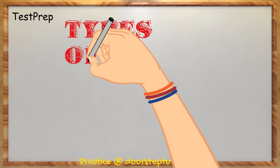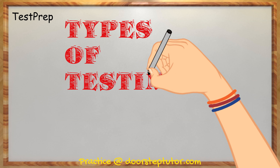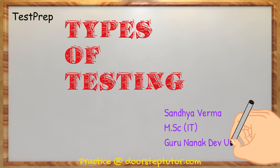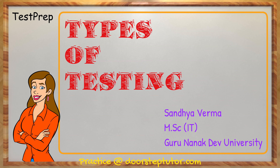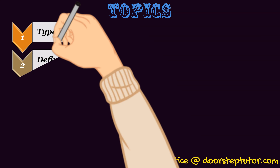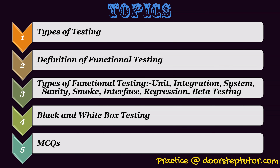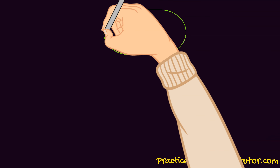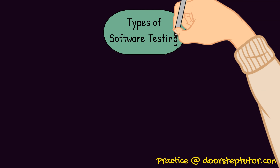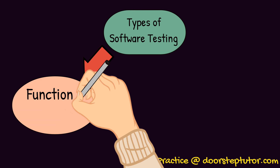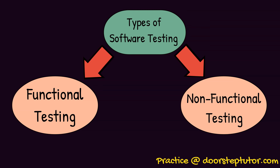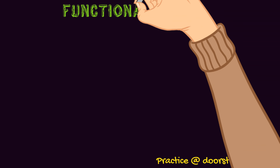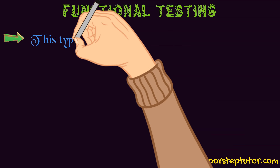Today's discussion topic is types of testing — the types of testing which are done for software to make it perfect, so that all the bugs and errors can be removed. We will discuss different types of testing techniques. The various content we are going to cover is mentioned here. There are two major types: the first is functional testing, and the second is non-functional testing of the software.